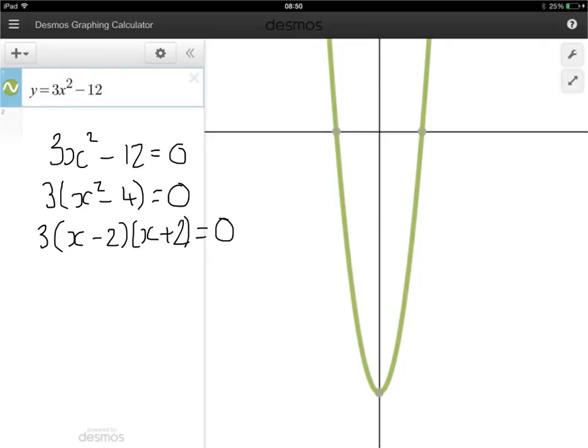So that means that either x minus 2 has to equal 0, or x plus 2 is equal to 0. In other words, either x is 2, or x is minus 2. So what we've done there is we've found the two roots. So this number must be a 2, and this number must be a minus 2.